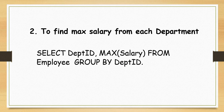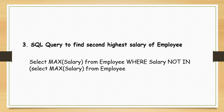The next question is: write a query to find the second highest salary of an employee. There are many ways to find the second highest salary in SQL — you can use either a SQL join or a subquery to solve this problem. Here I am solving it using a subquery. The query looks like this: SELECT MAX(salary) FROM employee WHERE salary NOT IN (SELECT MAX(salary) FROM employee). This is the query to find the second highest salary of an employee.